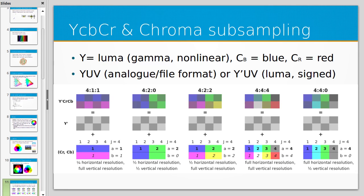The next format is YCBCR. YCBCR is a system where instead of storing separate red, green and blue channels, you store Y — which is luma. Even though it shares the same letter as luminance and yellow, it refers specifically to luma, which is a computer representation of luminance. It's a gamma-corrected value, meaning it's non-linear — I'll talk about gamma correction in a few slides. YCBCR then has a pseudo-blue channel and a pseudo-red channel, which are actually mixtures of blue, green, and red.